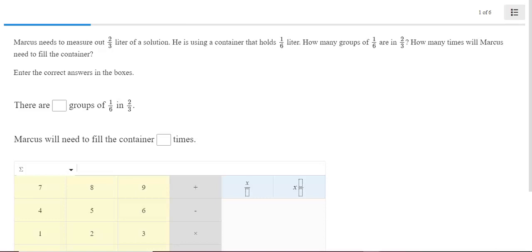Our first one: Marcus needs to measure out two-thirds liter of a solution. He is using a container that holds one-sixth liter. How many groups of one-sixth are in two-thirds? How many times will Marcus need to fill the container? There are blank groups of one-sixth and two-thirds.